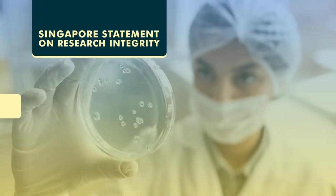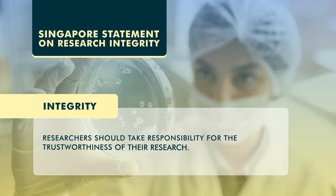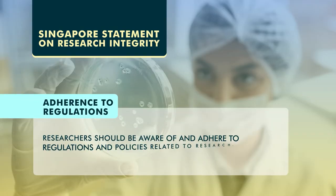The Singapore Statement also talks about 10 dimensions. The first is integrity — the researcher should take responsibility for the trustworthiness of their research, having trust in their work and taking responsibility for it. Second, adherence to regulations — every researcher needs to be aware of the regulations guiding that particular research: the policies, the regulations. If you are in academic, medical, or psychological research, many associations have come up with different codes, and you need to be aware of those and follow them.